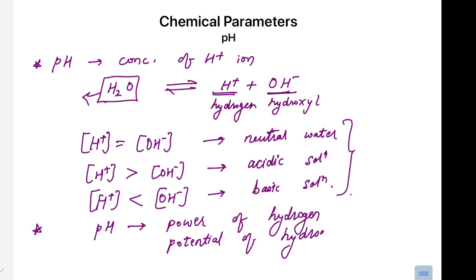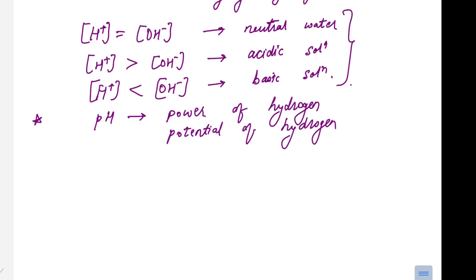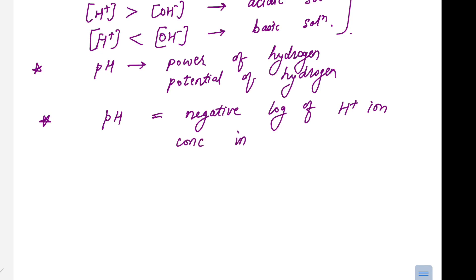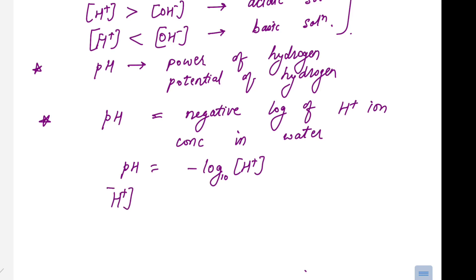pH represents the concentration of H⁺ ions present in a particular water sample. Mathematically, pH is defined as the negative log (base 10) of H⁺ ion concentration in water: pH = −log[H⁺]. The concentration of a species is denoted in square brackets. The higher the value of H⁺ ion concentration, the lower the value of pH.